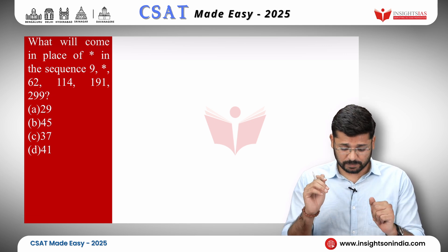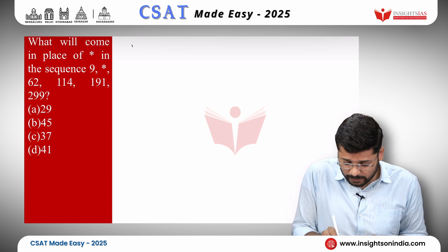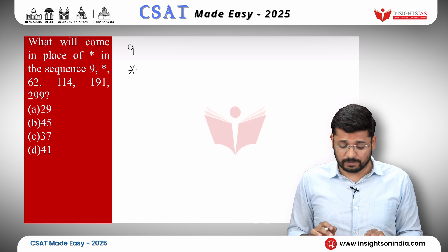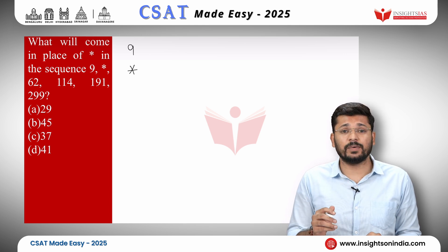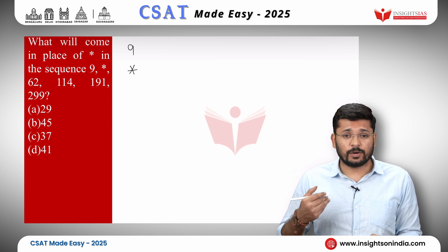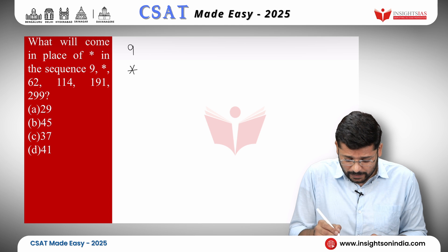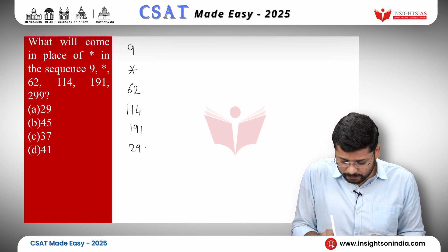This next question is at exam level. We write the numbers in vertical order: 9, *, 62, 114, 191, 299. The asterisk can come anywhere in the sequence, not just at the end. The methodology remains the same — write the numbers vertically, take the differences. Here and between 9 and * we do not know the difference yet. We take the known difference: 114 minus 62, which we calculate next.